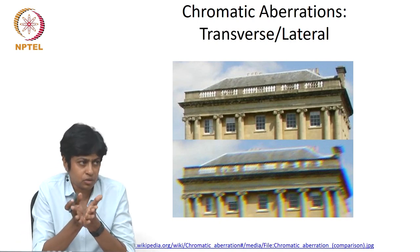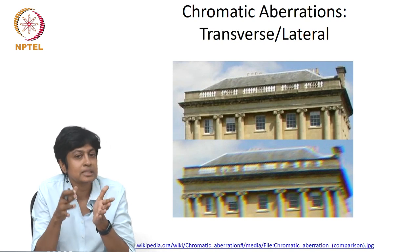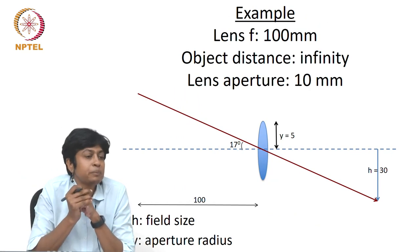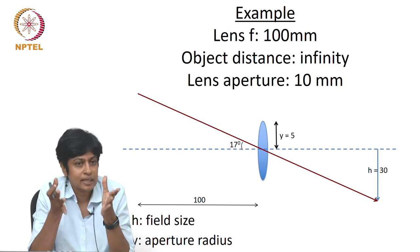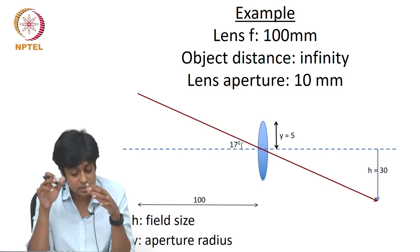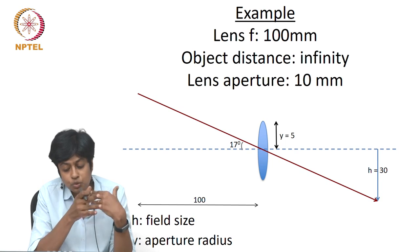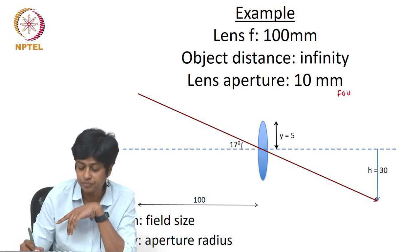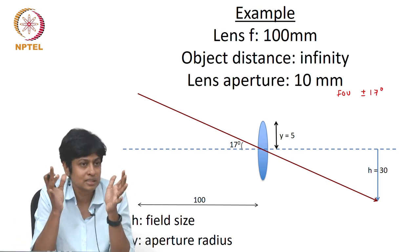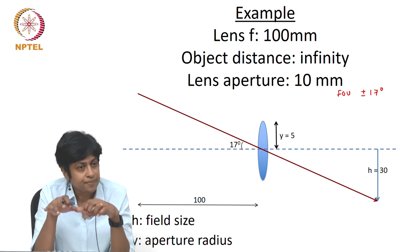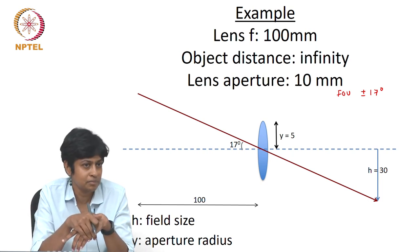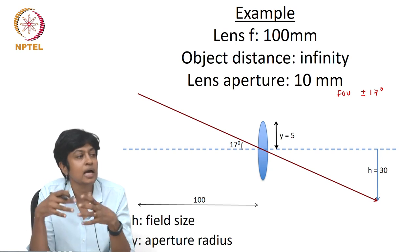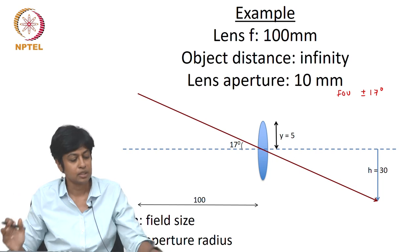I do not want to go into much detail of the chromatic aberrations, but I want to now spend some time on how we would correct these as well as other aberrations. Let us go back to the example from the last class: a single lens with focal length 100 millimeters, object at infinity, and a field of view of plus or minus 17 degrees. We are taking the same system.